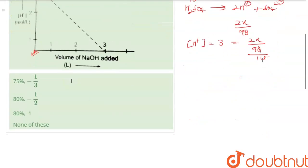H plus is the concentration. So from here we can say 2x is equals to 3 into 98.